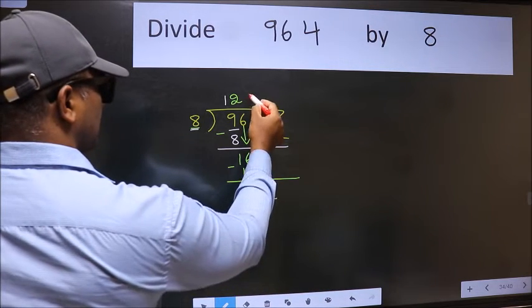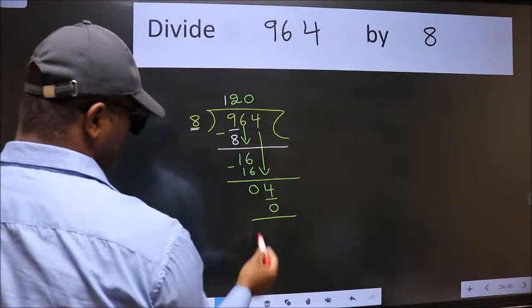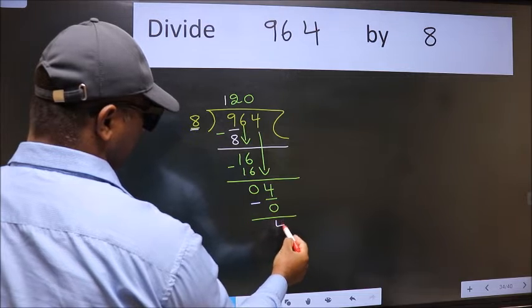So what we do is, we take 0. 8 into 0, 0. Now we subtract. We get 4.